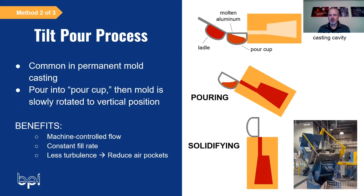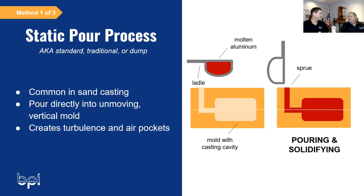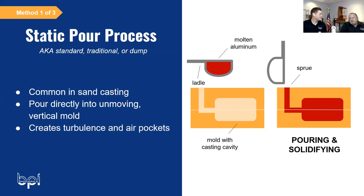Another question came in: does the operator control the pour on static versus tilt pour? Yes, the operator does — you have to do a steady pour to try to eliminate turbulence. So the pour rate on a static pour is all based on the operator. For larger castings, it doesn't depend on the operator — it depends on the ladle itself, because you're actually dumping a portable furnace versus a hand ladle. We've done up to 20,000 pounds at pour.